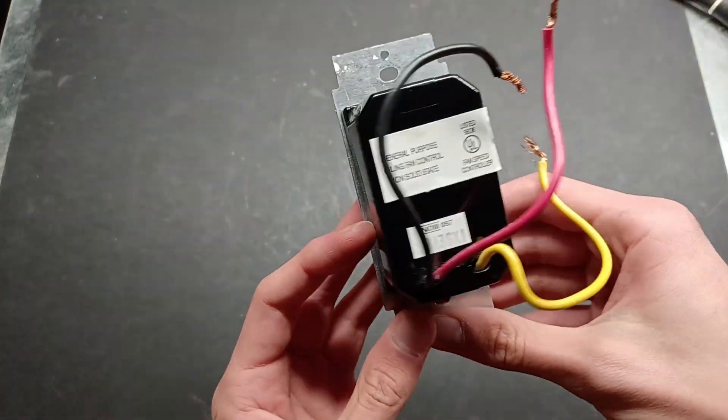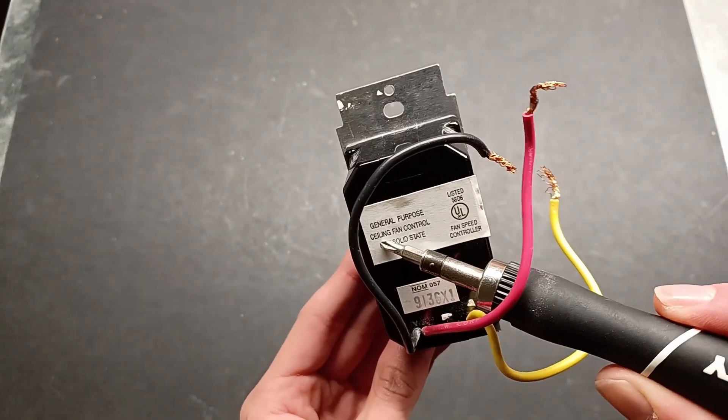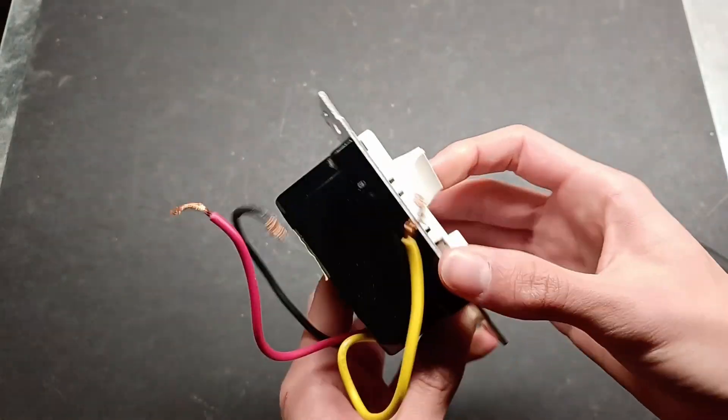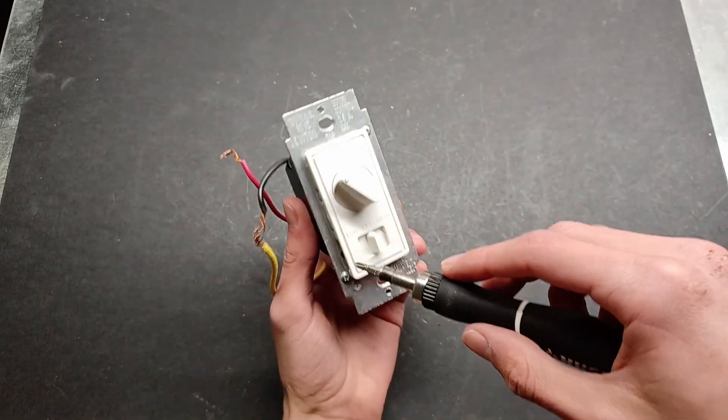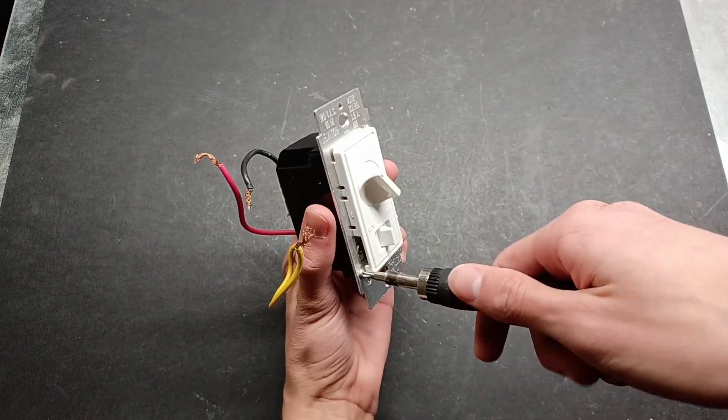However, an interesting thing to note is that it is designed for use with controlling ceiling fans, and that it worked just fine with the fan that it was controlling when it was installed. But now I will take a look inside of this. This front plate is held on with two screws, which I will remove.